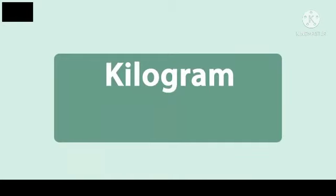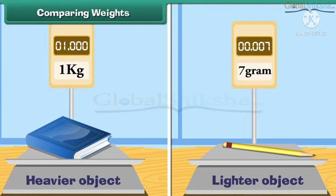Kilogram is the bigger unit of weight. That means it is used to measure heavy things. The short form of kilogram is kg. A heavier object has more weight than a lighter object.